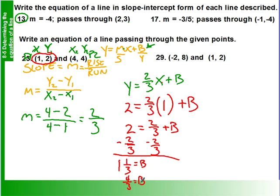We're not done yet. We need to put everything together. So we have y is equal to our slope, two-thirds, times x plus our b value, which is four-thirds.